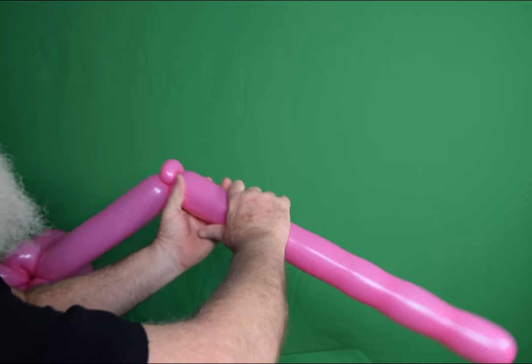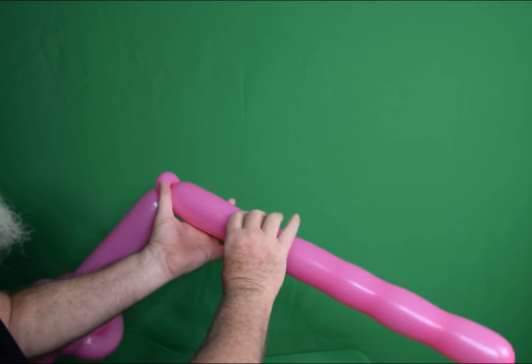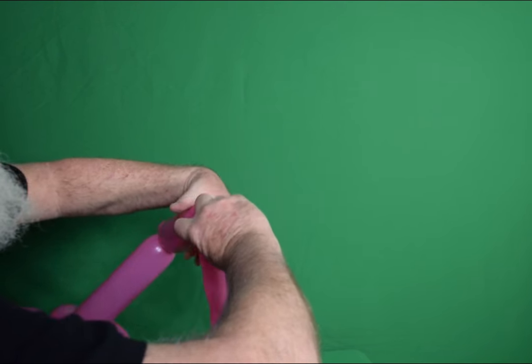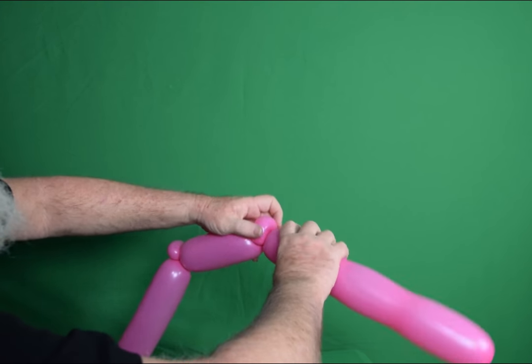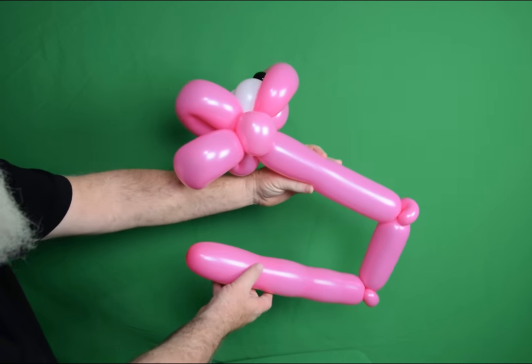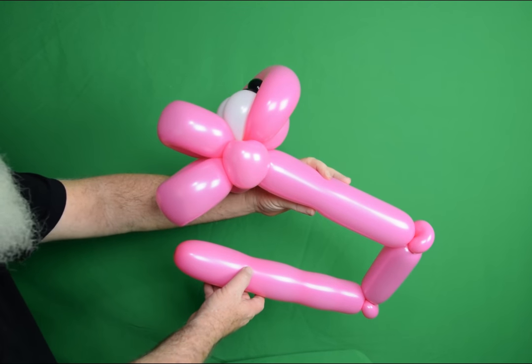Then you're going to go, squeeze it again. About five or six inches. This will be for the body. Make another pinch twist. And then what's left over will obviously be the tail. So we have this strange looking thing here. They will all make sense in a minute.